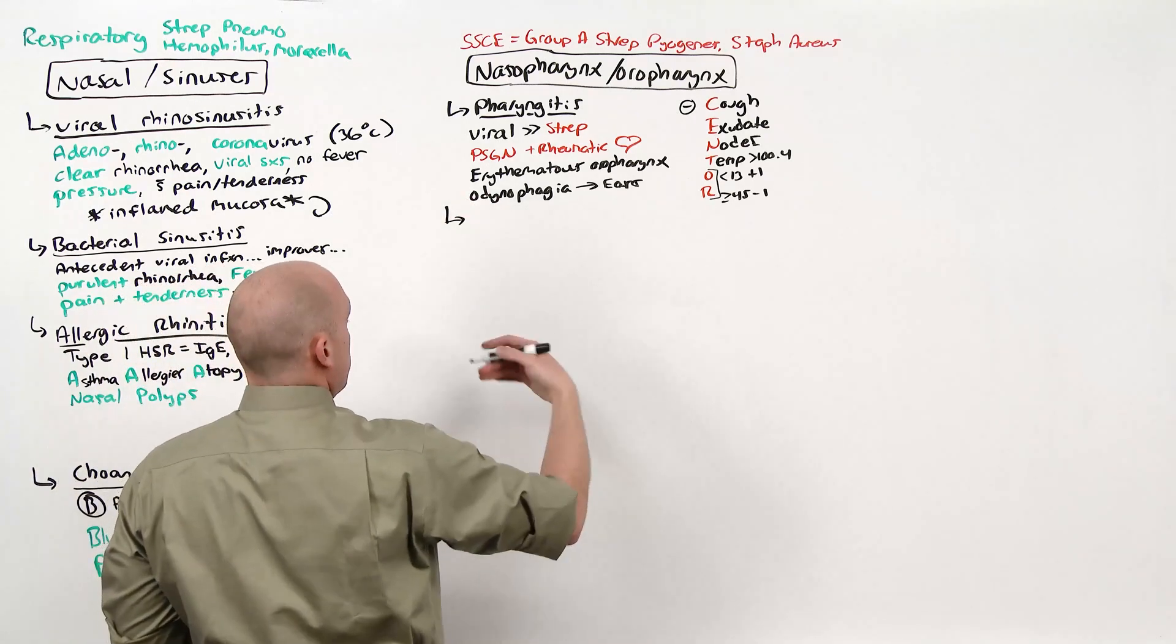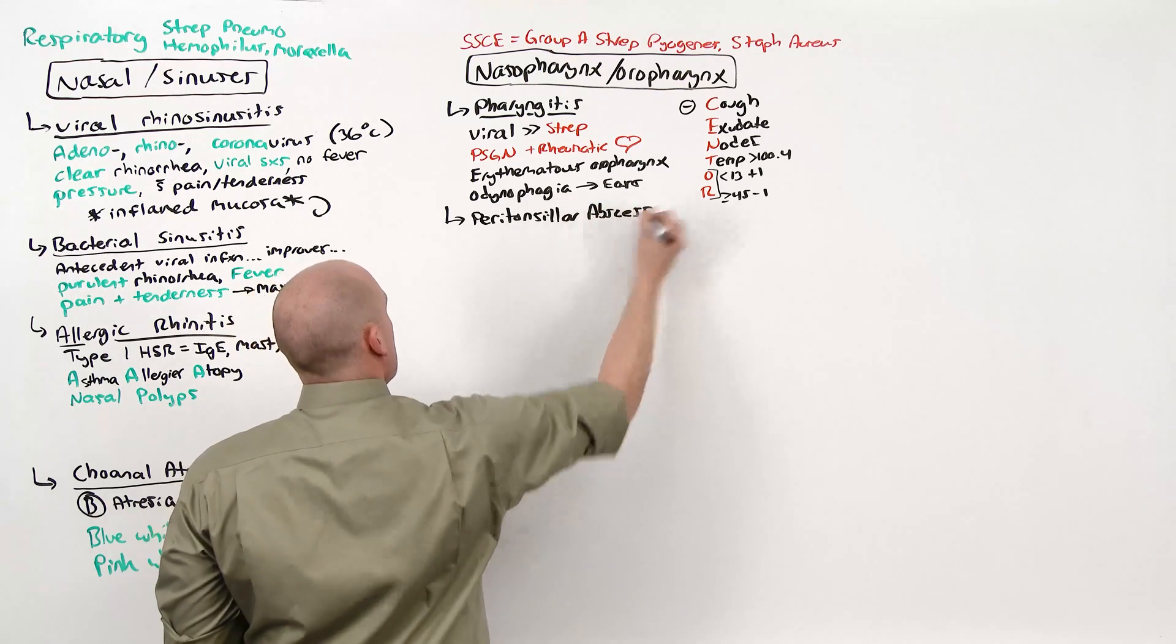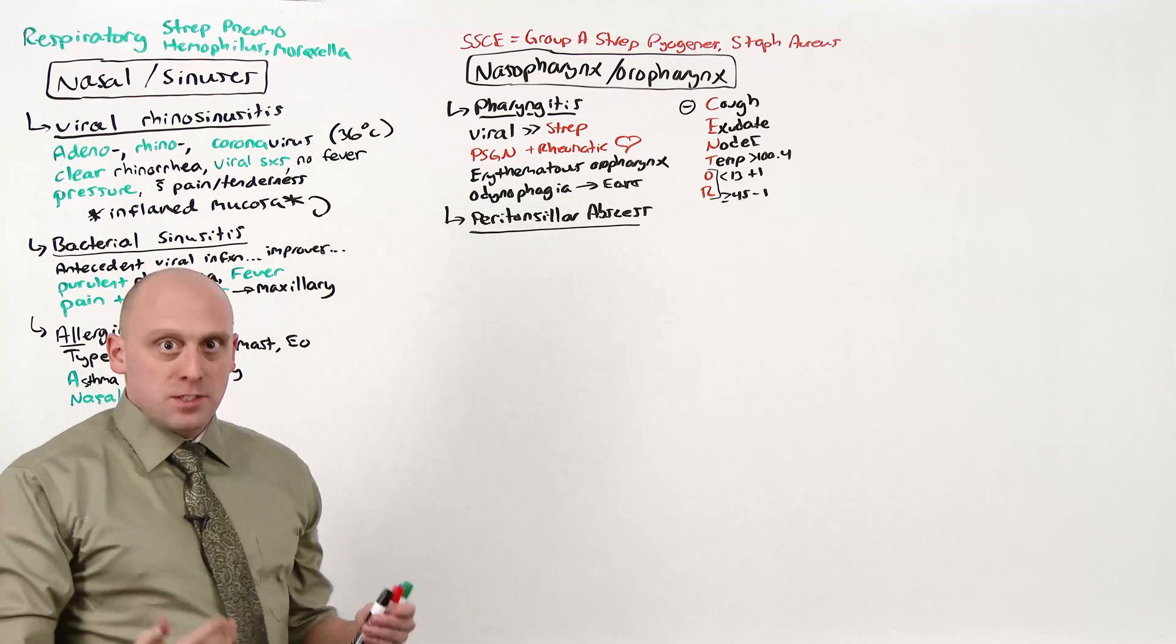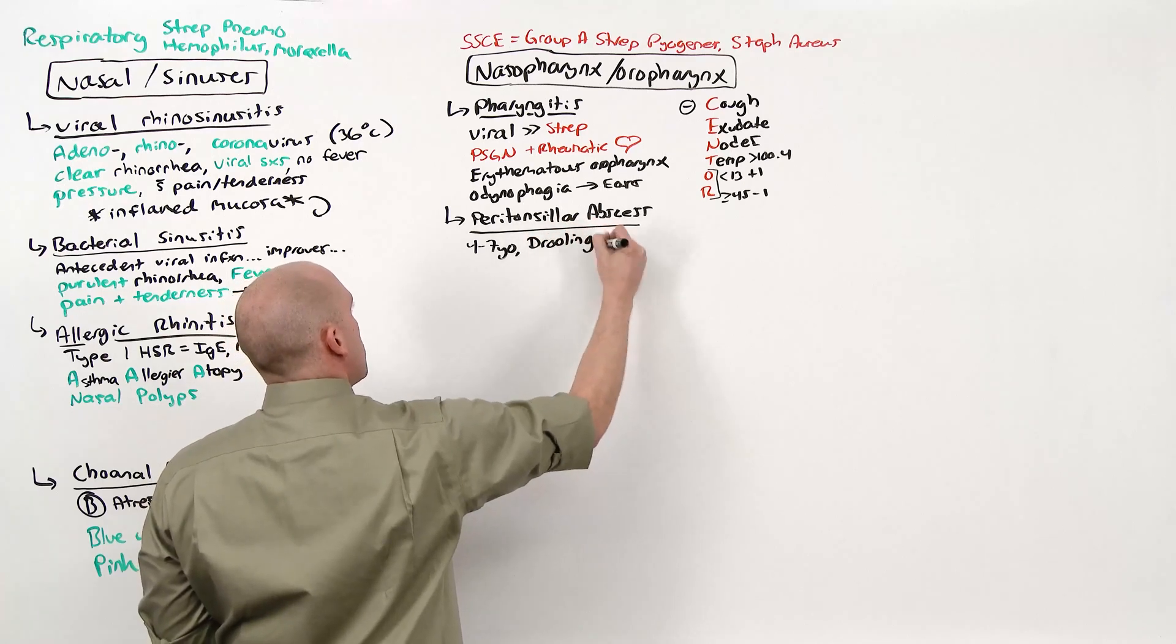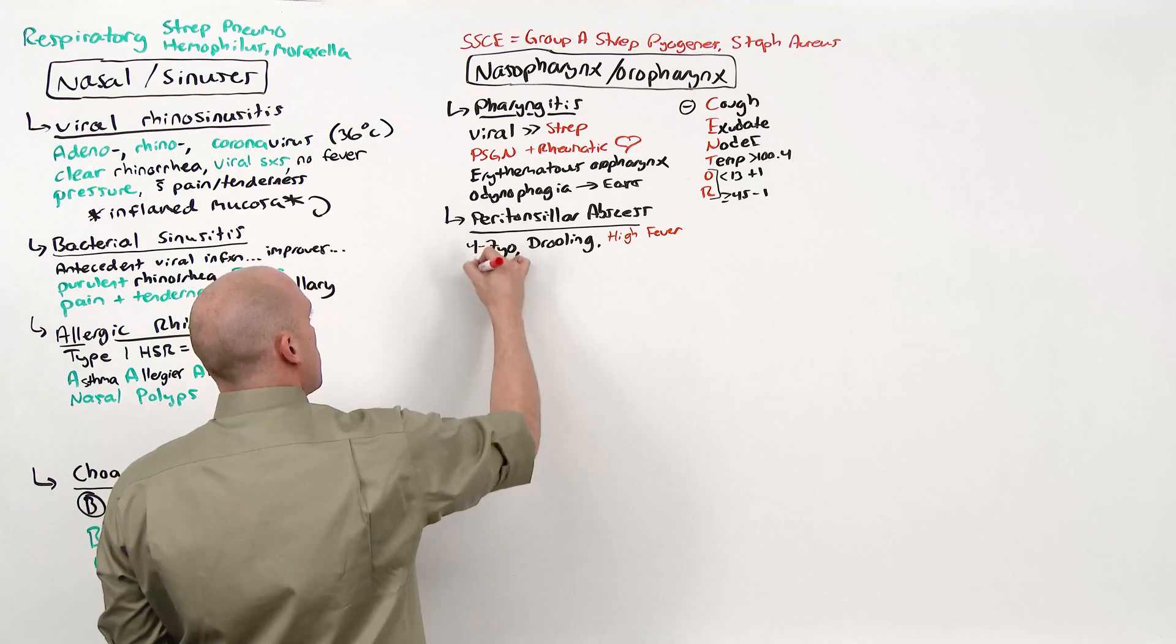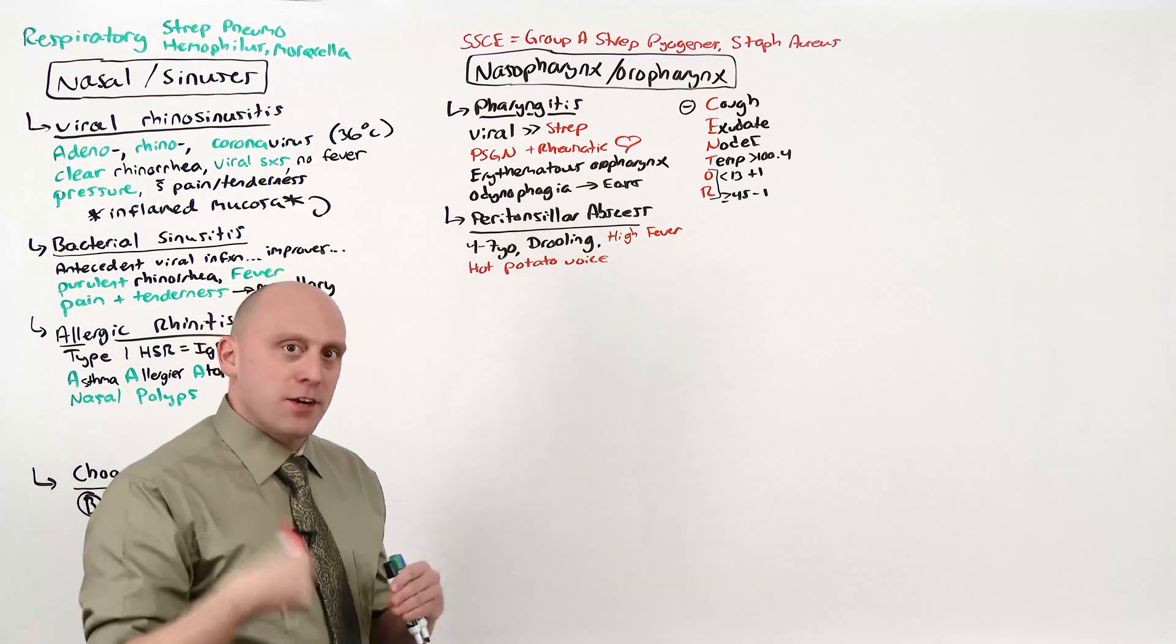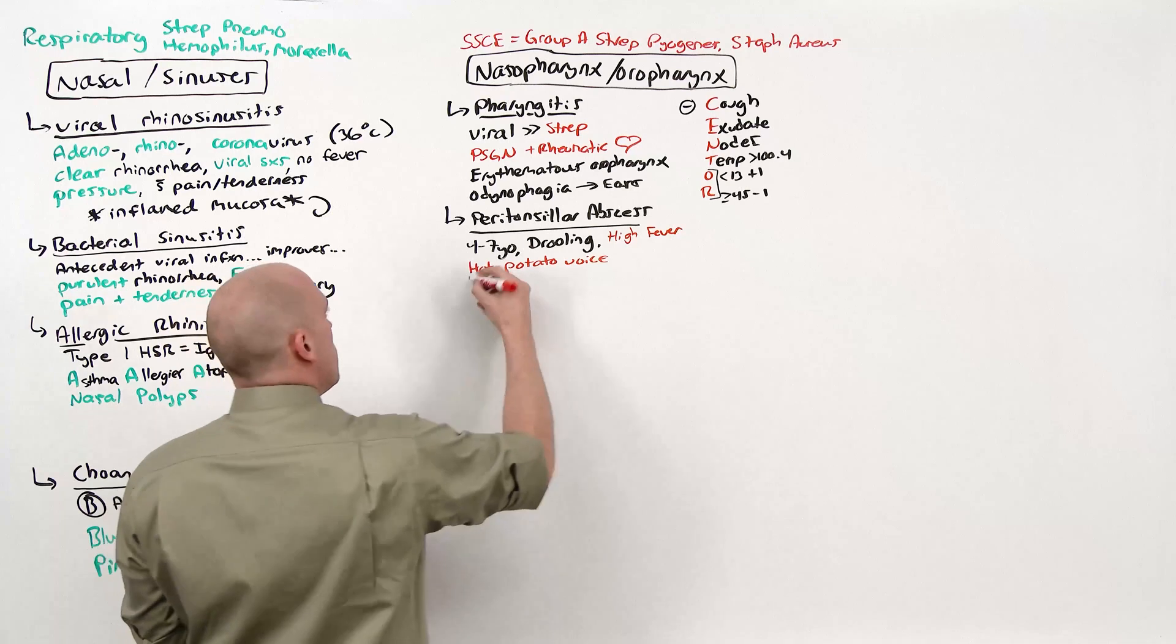Progressing through the bacterial severity, you can get a peritonsillar abscess. Now this is definitely going to be bacterial because it's squamous cell: group A strep pyogenes, staph aureus. Peritonsillar abscess is going to present with a pharyngitis. It's pharyngitis plus, it's more severe. It's going to occur in individuals who are four to seven years old, and they'll present with drooling because it hurts so much to swallow. These patients will have a high fever, and they'll speak with a muffled or what's called a hot potato voice. In addition to seeing an inflamed erythematous oropharynx, you may actually see the peritonsillar, off to the side, abscess mass, but if you don't actually see the abscess itself, what you'll see is it pushing all the structures over: uvula deviation.